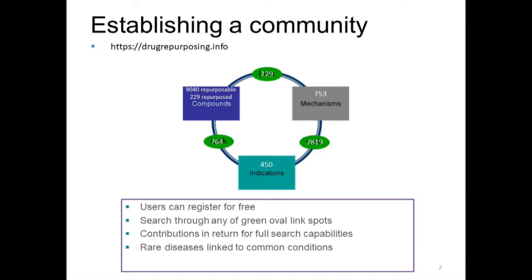The stats on the database are pretty comprehensive — I'm not saying completely comprehensive, and I don't think it's possible to be completely comprehensive. There are nearly 3,000 connections between mechanisms and indications, all of which potentially are repurposable projects which can be taken forward. The compounds database includes 10,000 abandoned compounds, which are obviously substrates for repurposing. It also includes information on 10,000 compounds which are on the market, for which secondary mechanisms of action have been identified, which can also be quite useful from a repurposing perspective.